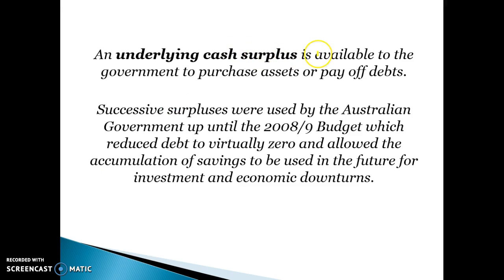The underlying cash surplus is basically the money available to the government to purchase assets or pay off debts. Successive surpluses were used by the Australian government up until 2008-2009 to basically get rid of all our debts, taking debt down to zero, and then still accumulating savings to be used in the future for investment and economic downturns. Now we don't have any money for the future for any economic downturn to spend at all.